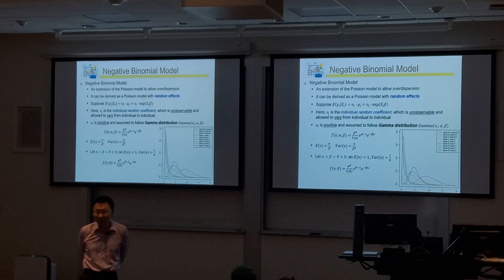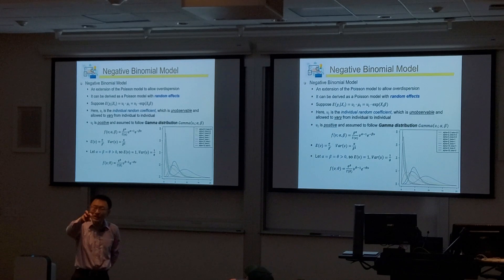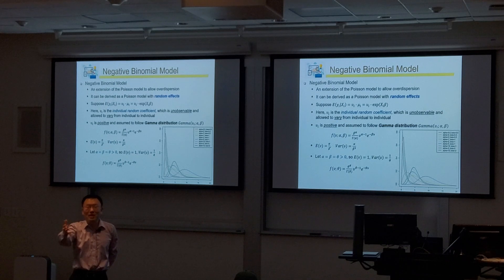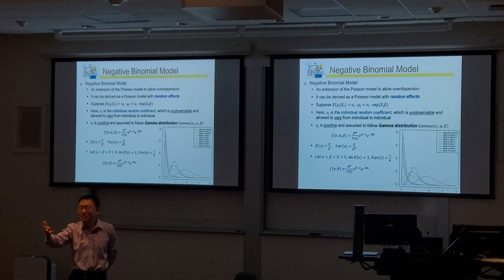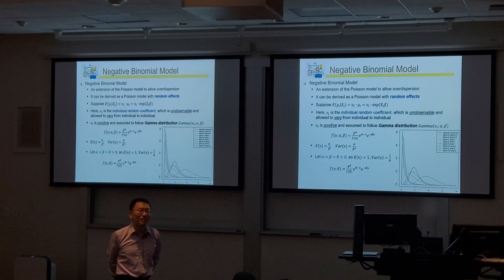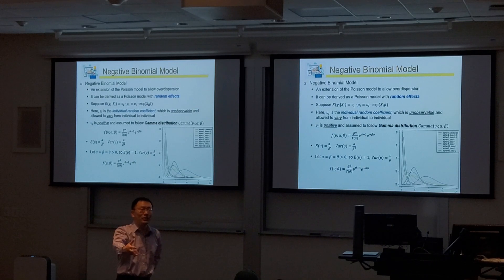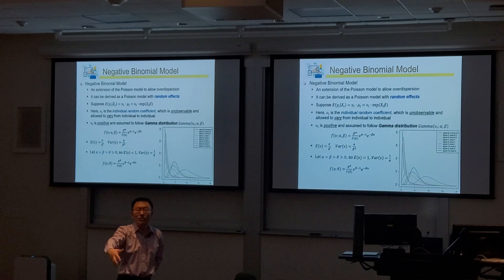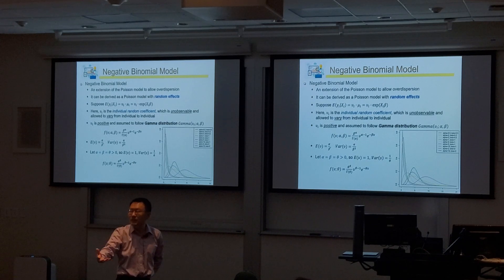Do you still remember what the Poisson model is? Without a formula, can you describe in a single sentence how we model those count values through a Poisson model? The y variable is those count values — 0, 1, 2, 3. So how do we model the probabilities of y taking those different count values?